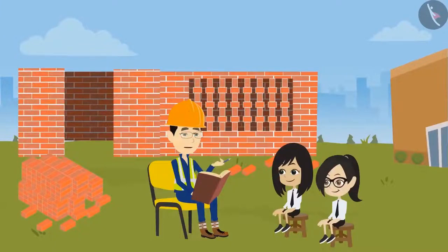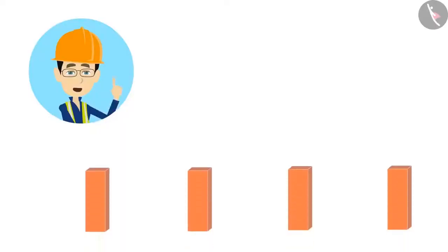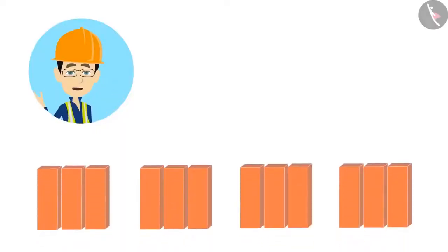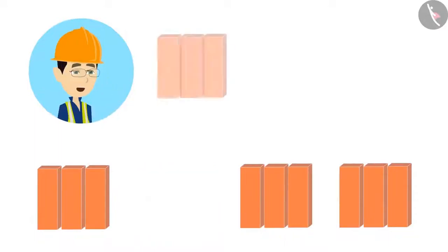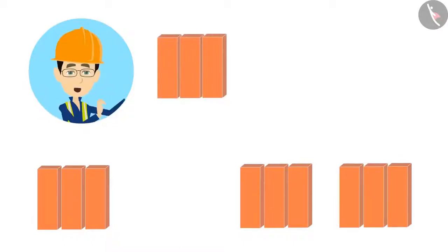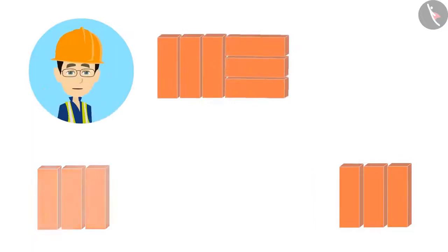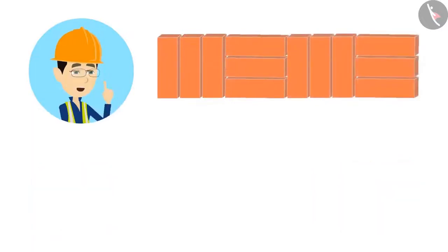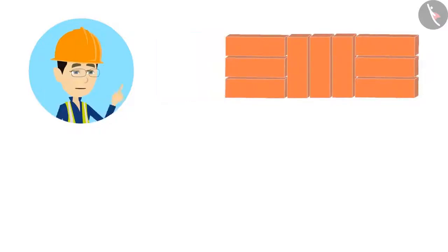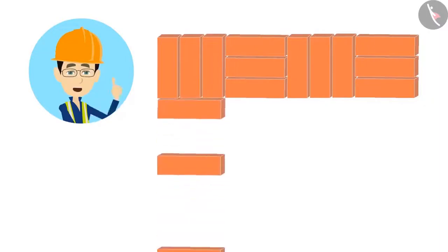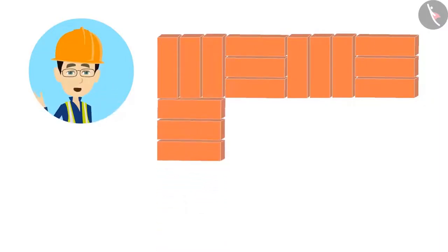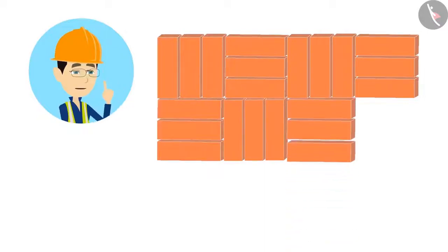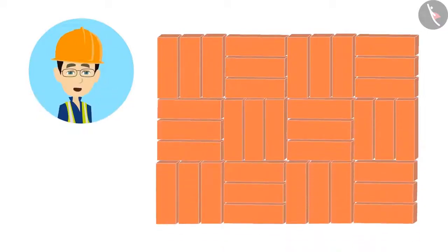First make groups of three bricks, then make the first line from these groups. Keep one group so that the bricks are vertical, then keep a different group so the bricks are horizontal. Once again, a vertical group and a horizontal group. Now let us make the line below it. Because the top line started with vertical bricks, this line will start with horizontal bricks, then vertical, then horizontal. In this way we make a complete pattern.